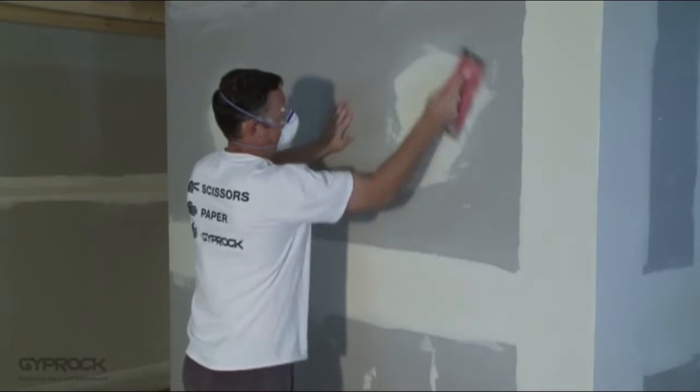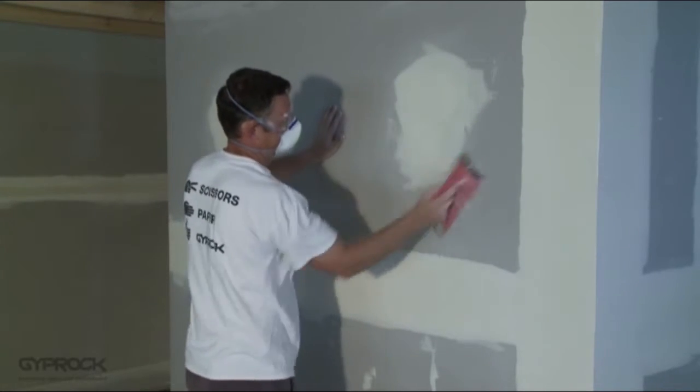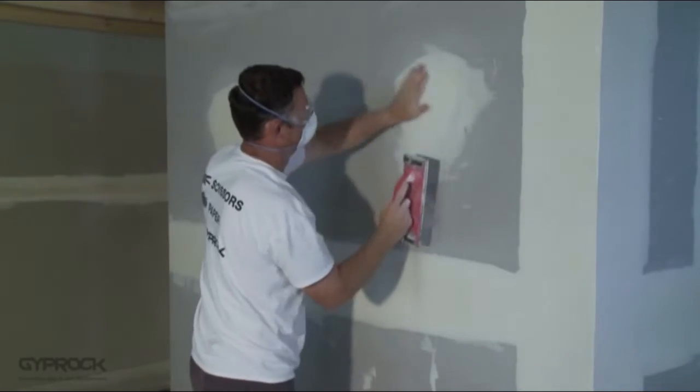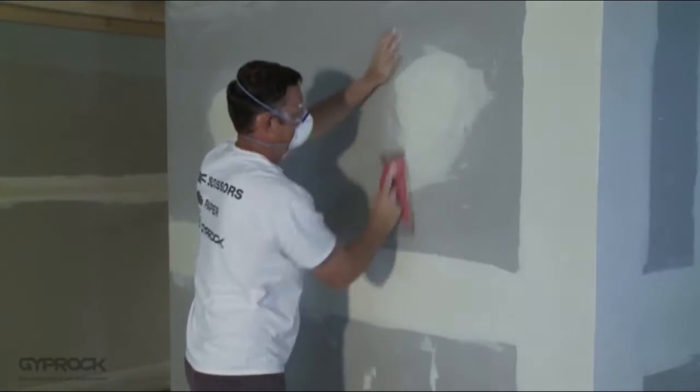If any areas of your walls or ceilings need filling, mark them lightly with a pencil, then come back and fill them all at once with your preferred finish coat. Re-sand any filled areas when they're dry, and then you're ready for finishing.